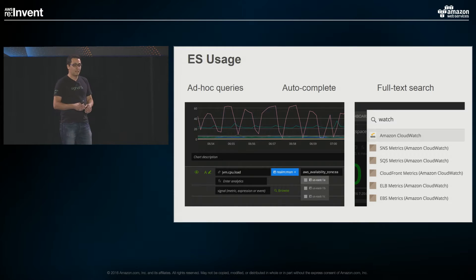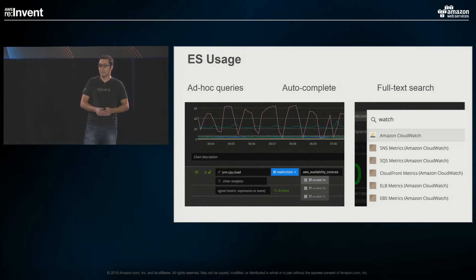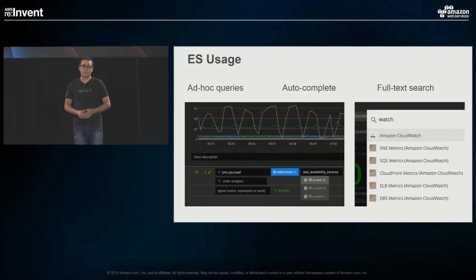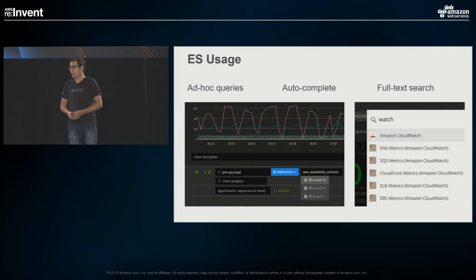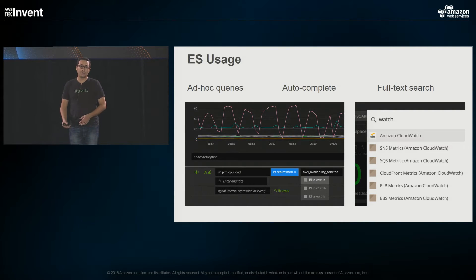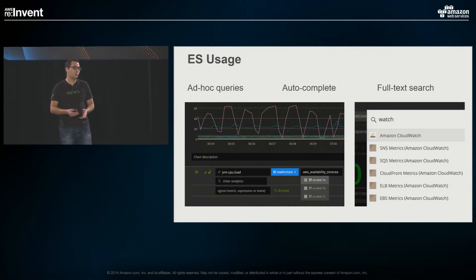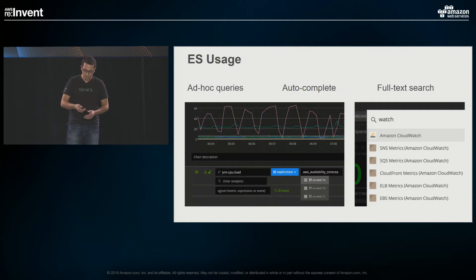We use it for three main use cases. One is being able to run ad-hoc queries against the data — we should be able to find a metric by the metric name, by properties on the metrics, et cetera. The second use case is we use it for auto-suggestions, so people can type and as they type, things are being suggested, and that's being driven by Elasticsearch in the backend. And our third use case is obviously full-text search — you type, for example, a keyword, and you get things that include that keyword in the results.